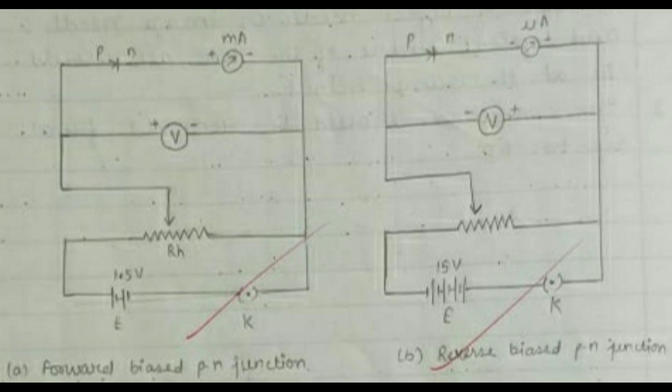This image shows the circuit diagram that has to be followed while performing this experiment. The first one shows the circuit diagram of the PN junction in forward bias and the second one is for the PN junction in reverse bias. The circuit has to be followed very carefully, otherwise errors might occur.